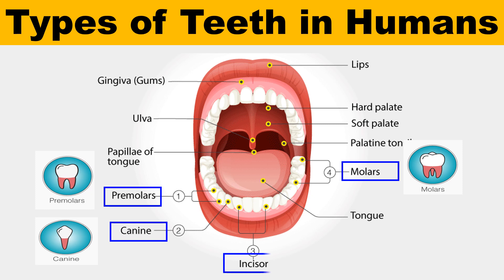The next type of teeth are incisors. These are present at the front of your mouth and have sharp edges adapted for cutting food into small chewable pieces. Humans have eight incisors — four in the upper jaw and four in the lower jaw.